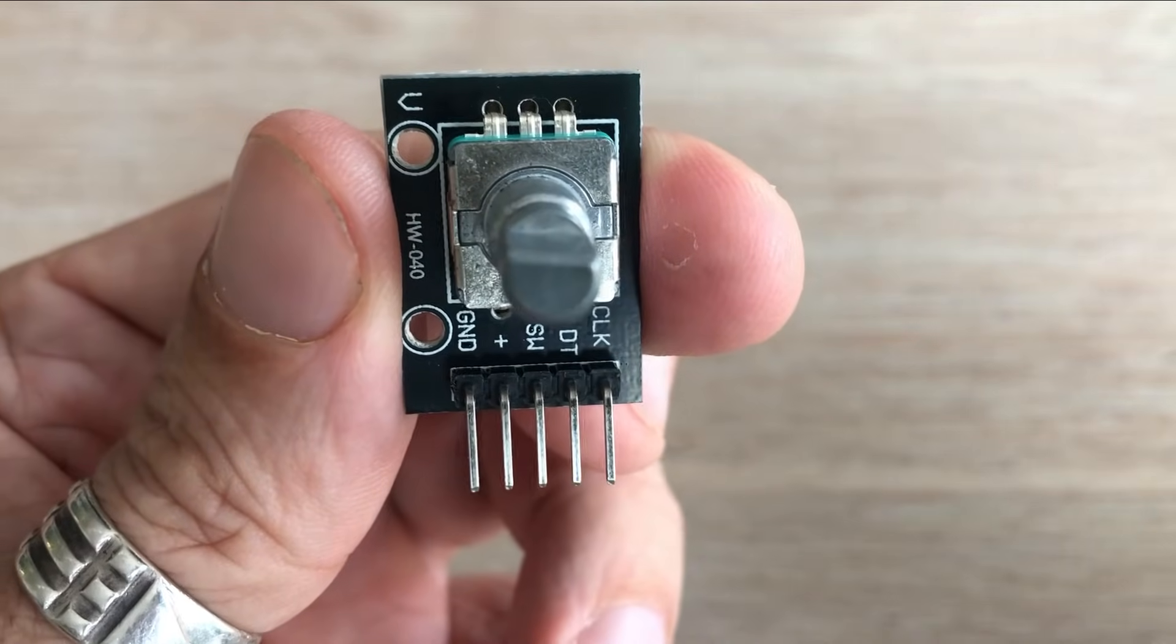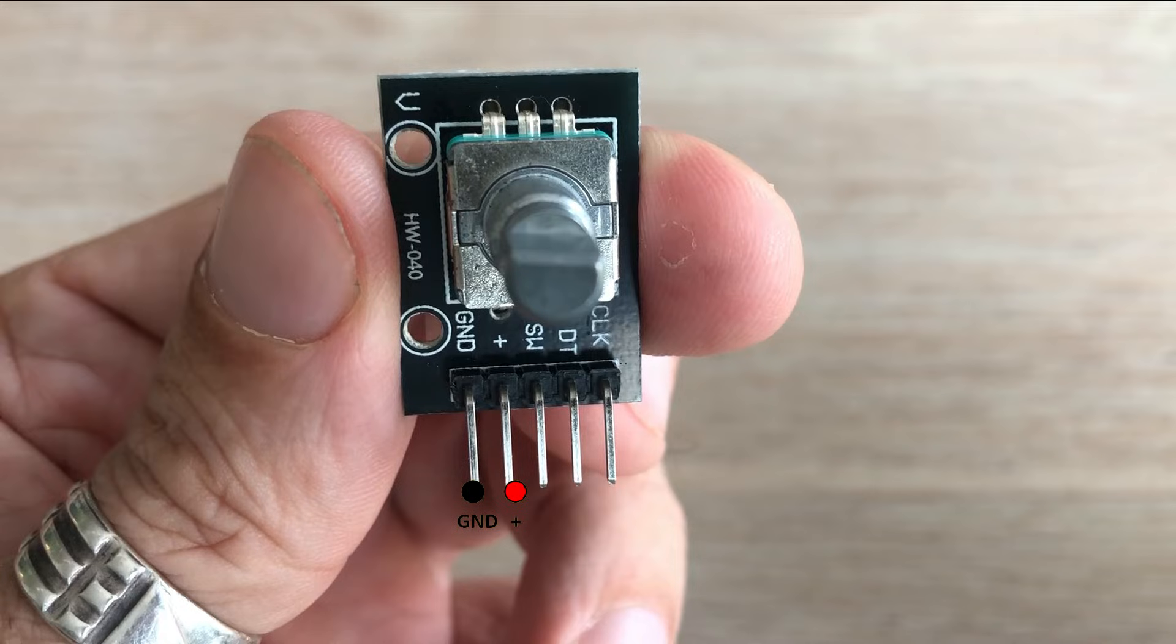Rotary encoder has 5 pins. Usual ground and 5V pins and then CLK and DT pins which are output pins that produce electronic pulses when the shaft is rotated. You would ask why 2 pins and not just 1. This will be explained later in this video. And finally SW is an active low push button output. When the shaft is pressed the voltage on that pin goes low.